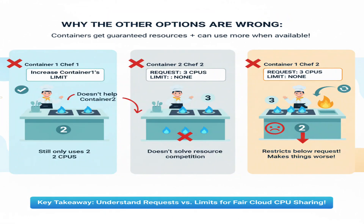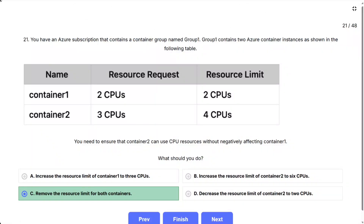Increasing Container 1's limit to three CPUs doesn't help Container 2 get more resources. Increasing Container 2's limit to six CPUs doesn't solve the core issue of resource competition. Decreasing Container 2's limit to two CPUs would actually restrict it below its three CPU request, making things worse. Think of it this way: removing limits is like telling both chefs, you're guaranteed your minimum burners, but feel free to use any extra ones when they're free.